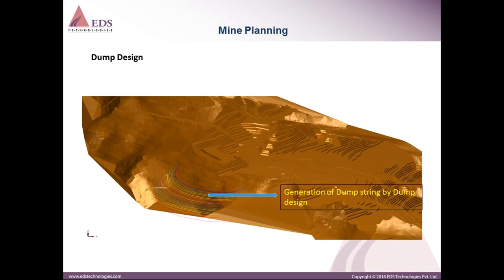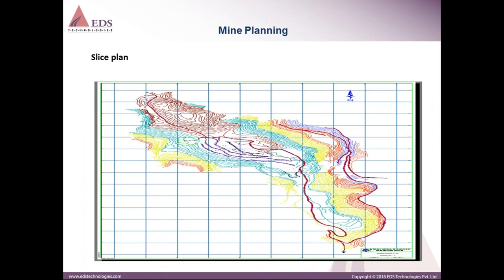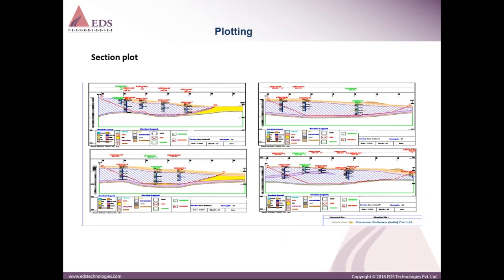Once pit design is completed, dump design follows to accommodate waste material. A location is selected for the dump, a 3D surface is generated, and the volume is calculated to verify whether the dump accommodates all waste excavated from the pit. If not, another area must be selected and another dump designed. These are also the plot plans of a slice plan from the block model. A drill hole log example shows borehole depth, types of lithology, grade, and sample length.